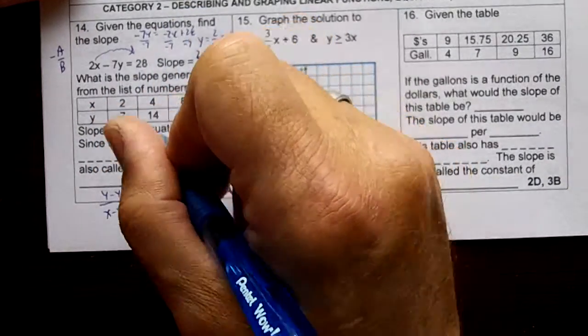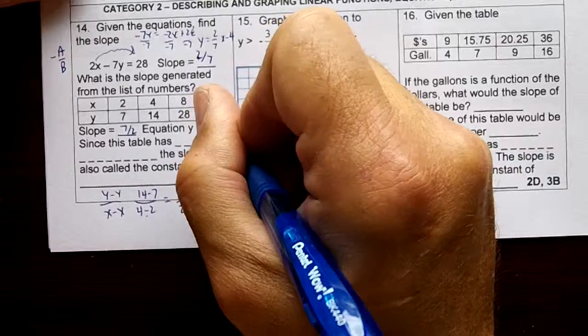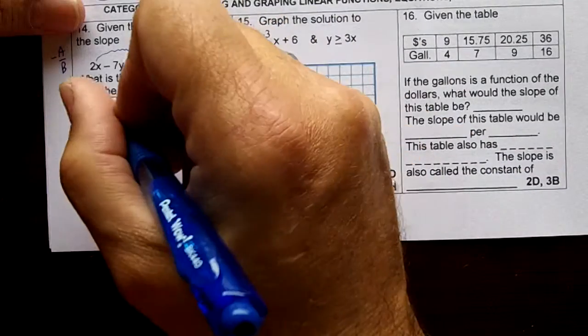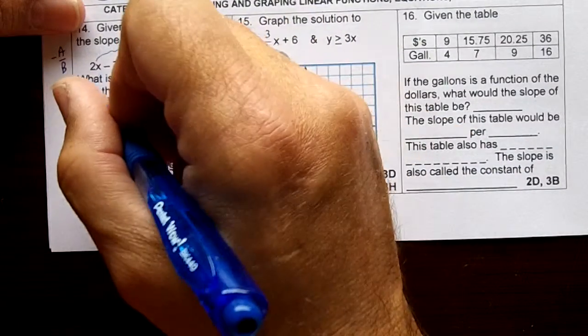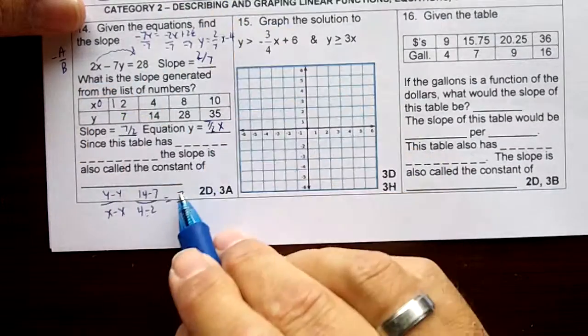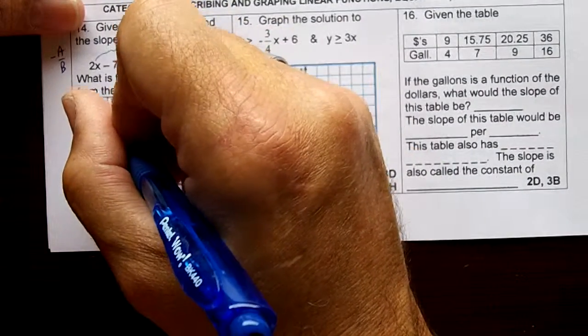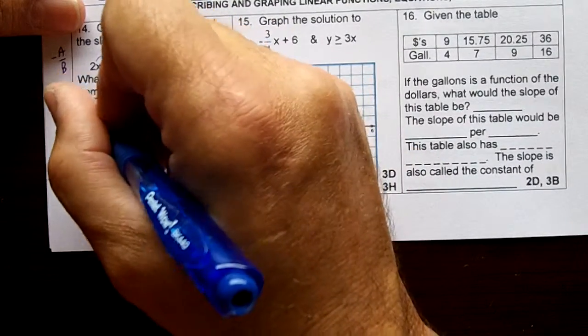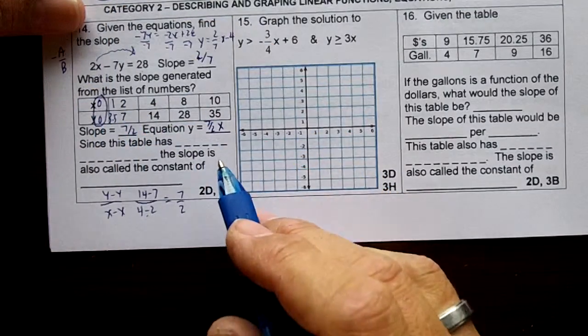Now then on this one right here, the slope would be 7 over 2x. And if you notice something here, if you go back to your 0 term, this is 3 and a half. 1 would be 3 and a half, and 0 would be 0. This right here means you have direct variation.